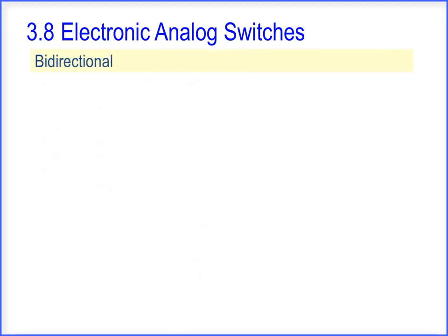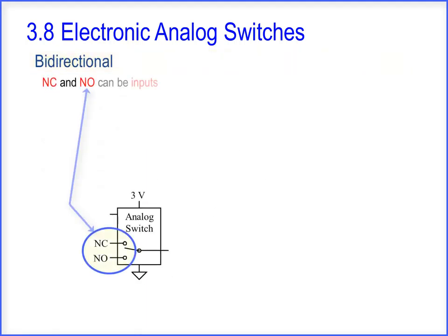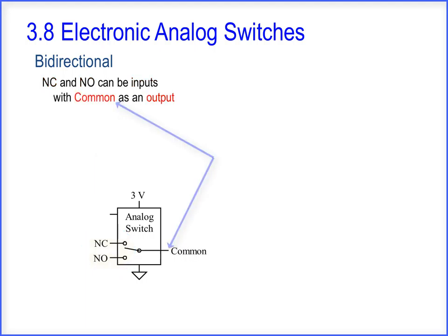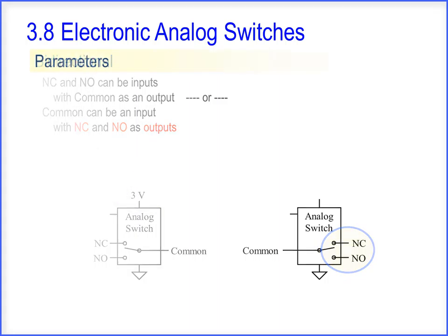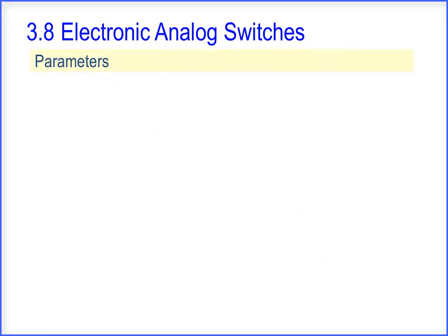Analog switches are bidirectional. NC and NO can be inputs, with common as an output. Or, common can be an input, with NC and NO as outputs.